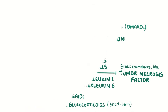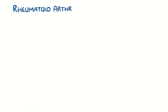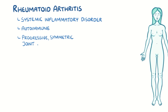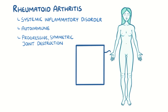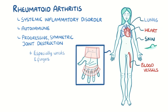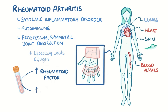As a quick recap, rheumatoid arthritis is a systemic inflammatory disorder of autoimmune origin that's primarily characterised by progressive symmetric joint destruction, especially in the wrists and fingers, but may also affect other joints and many organs such as the skin, heart, blood vessels and lungs. It's marked by elevated rheumatoid factor and anti-cyclic citrullinated peptide antibodies.